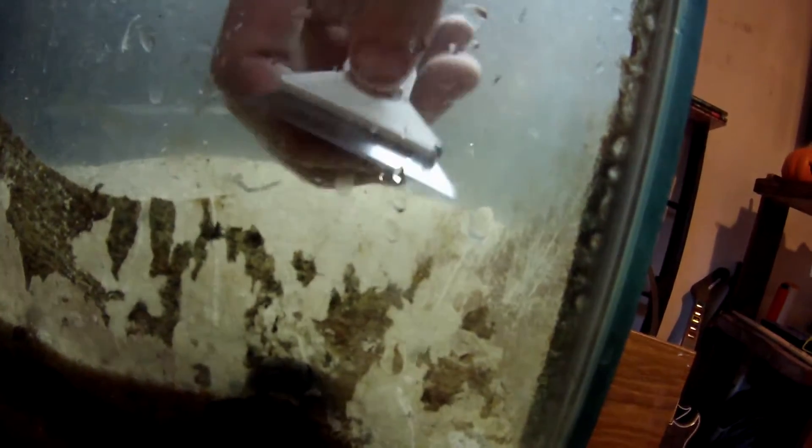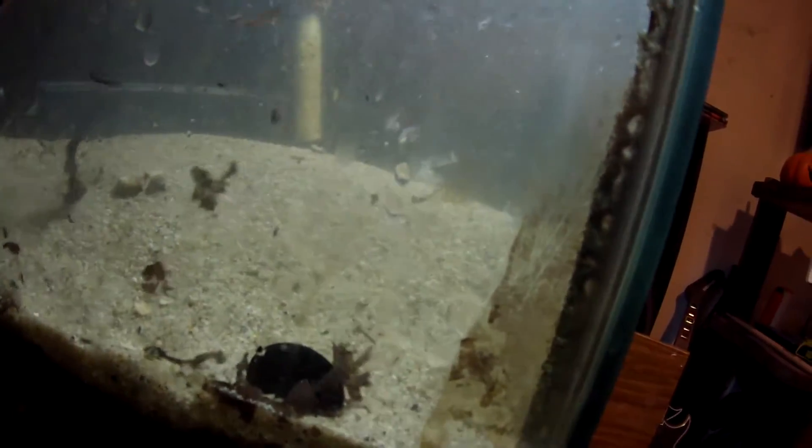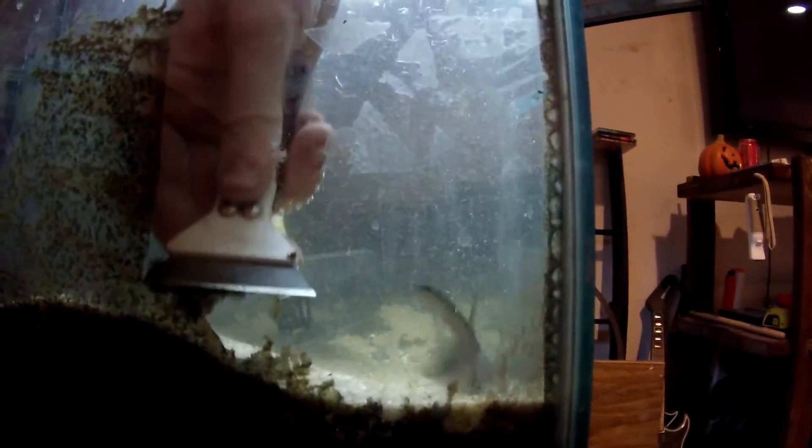The scraper performs better than any other algae removing solution that I have tried before, including those magnetic glass cleaners that tend to lag behind and then fall to the bottom of the tank. In fact, it works so well that the algae comes off in strips as opposed to flakes. For its intended purpose, I give the scraper a 5 out of 5.